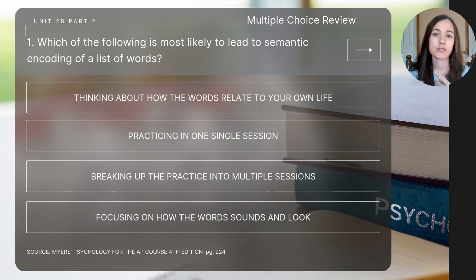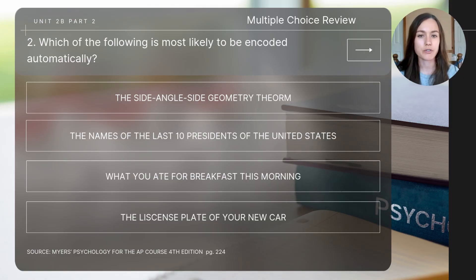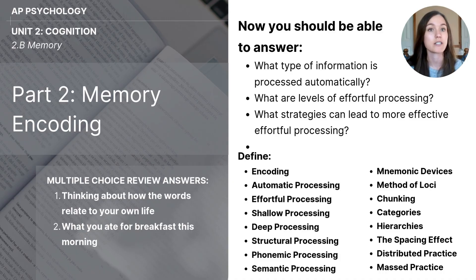To close out today's video, let's do a few short review questions. First: which of the following is most likely to lead to semantic encoding of a list of words? Second: which of the following is most likely to be encoded automatically? Make sure to pause the video after each question to determine your answer. The answers are on the left-hand side of the screen. Before you finish, make sure you can answer those key focus questions and define the essential vocabulary terms.